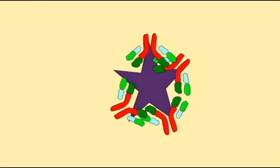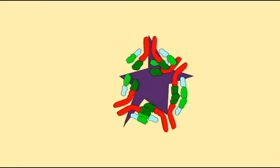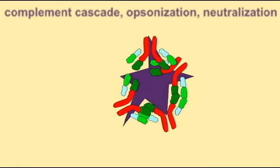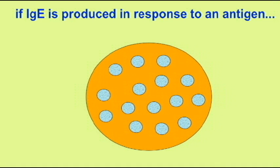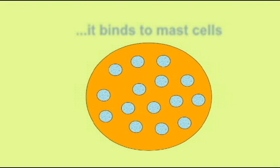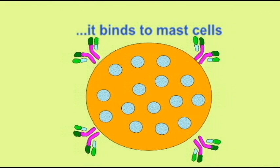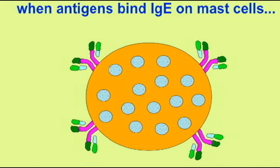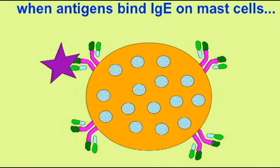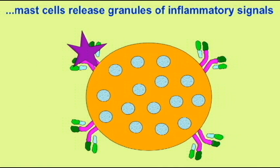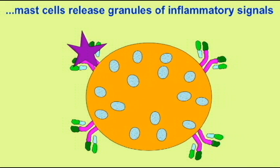Mast cells can be found in a number of connective tissues, and these have the important role of promoting inflammation. Antibodies can bind to mast cells, and then substances can bind to these antibodies. When this binding occurs, the mast cell releases its granules, which are full of inflammatory factors.